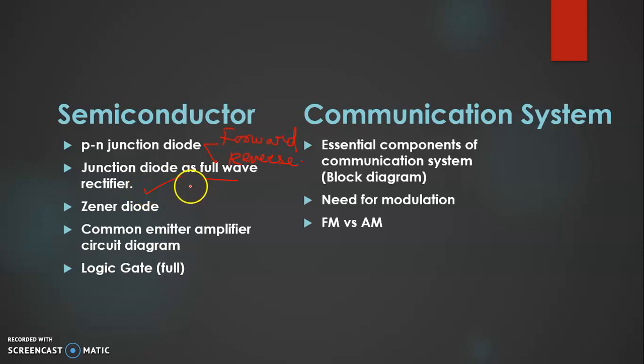Next, junction diode as full wave rectifier. Last year students half wave rectifier, so this year I think full wave rectifier output characteristics with circuit diagram can come. Zener diode every year, so it's a very small topic to study Zener diode. Then common emitter amplifier circuit diagram, logic gates something can come, AND gate NOR gate, last year NOR gate combination of gates can come.